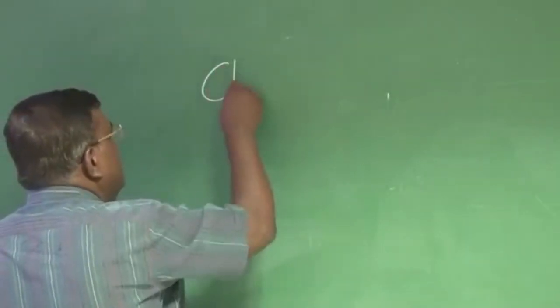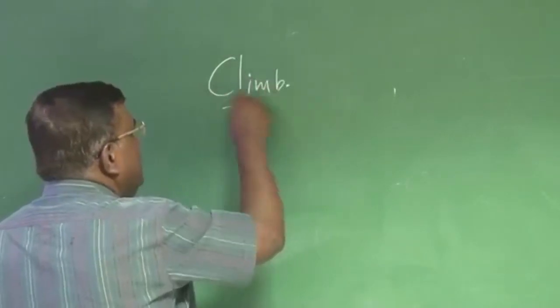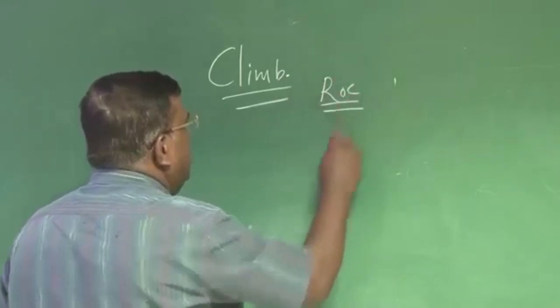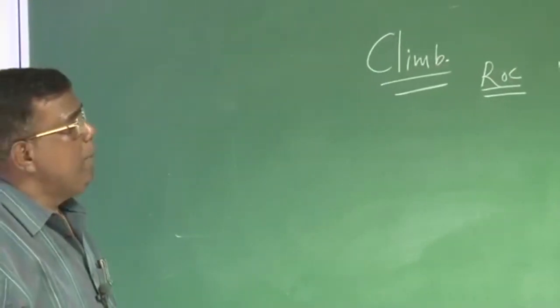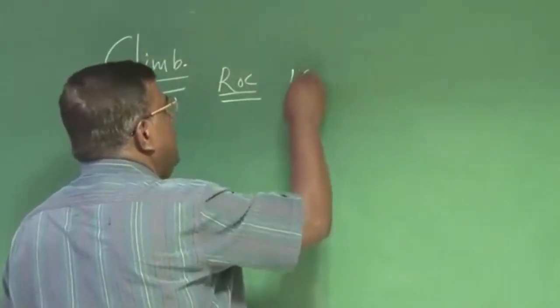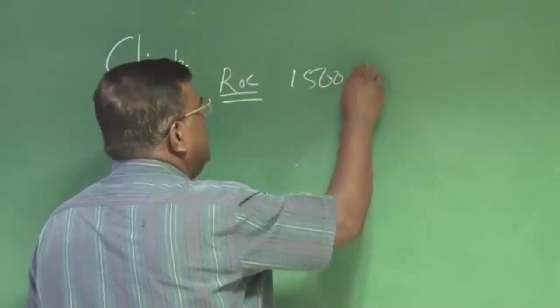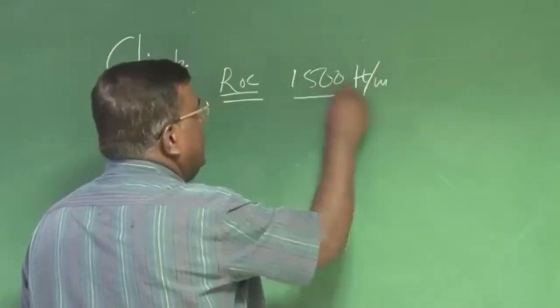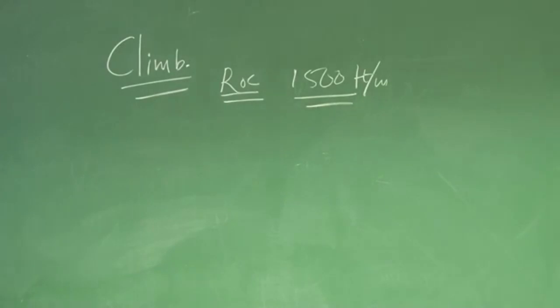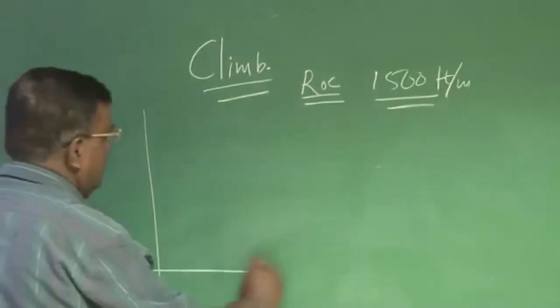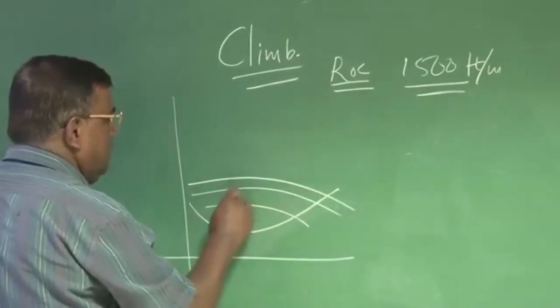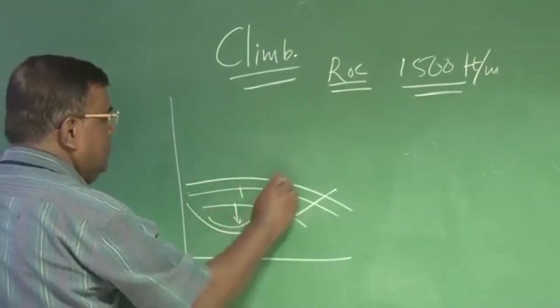After cruise, if I need to discuss something on climb, you will find this rate of climb, whatever we have prescribed maximum rate of climb. To maintain that, this is 1500 feet per minute. To maintain that, you need an excess power at different altitude. As we are going higher and higher, this gentleman comes down and this goes like this. So your excess power reduces.